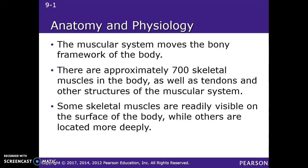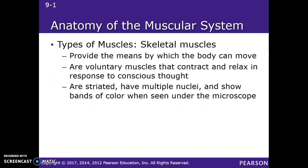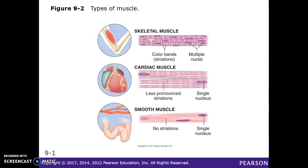Some of them you can see, some of them you can't see. In addition to moving the bones and supporting the skeletal system, muscles also do a lot of things internally. We're going to be focusing mainly on the skeletal muscles in this particular chapter. They will also talk a little bit about the cardiac muscle, which is obviously the heart, and the smooth muscles. Smooth muscles are the ones that make things happen inside — digestion and those types of things are handled by the smooth muscles.